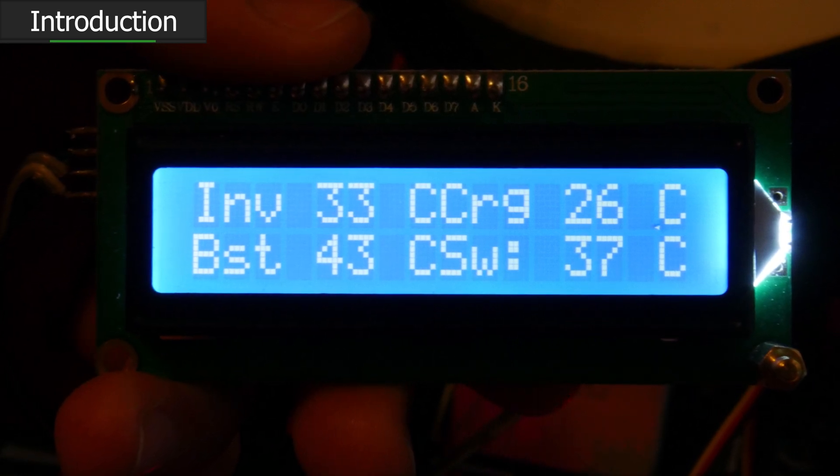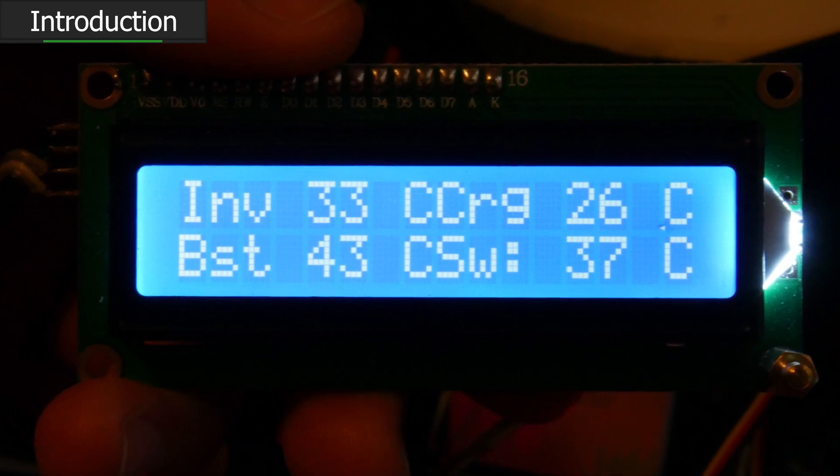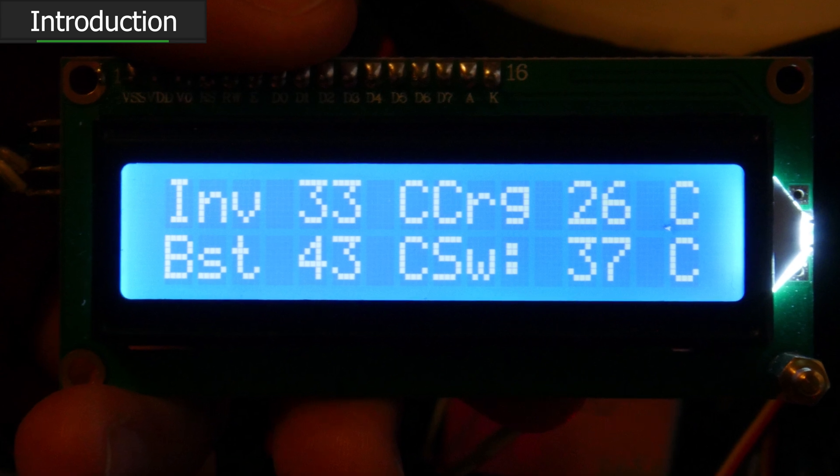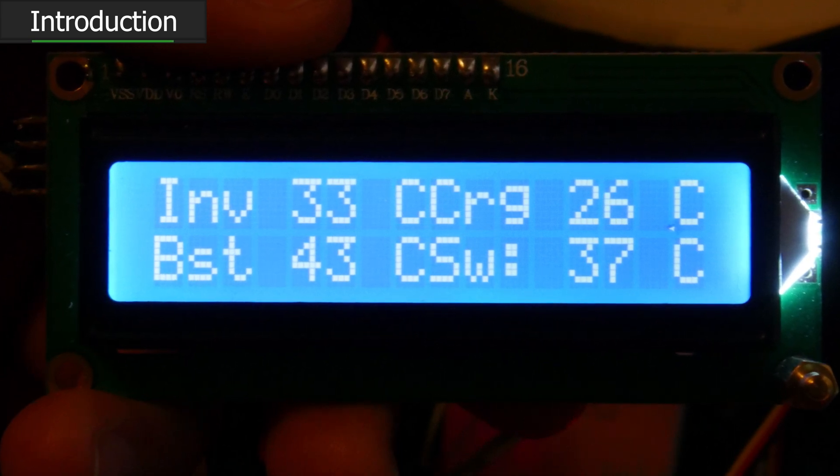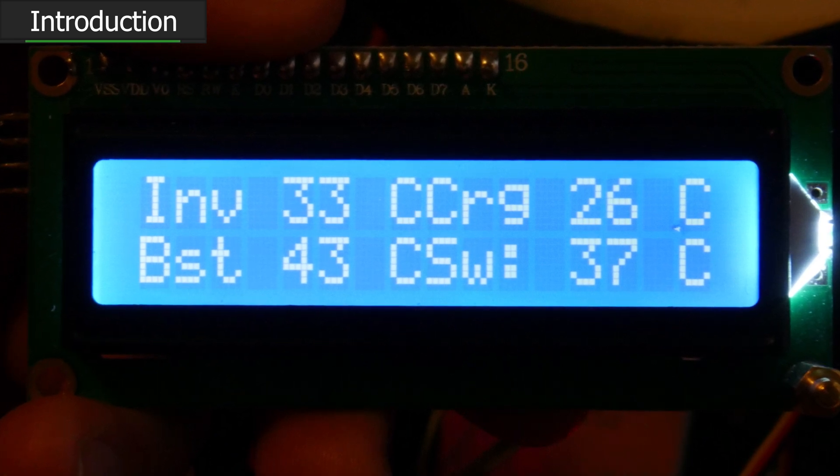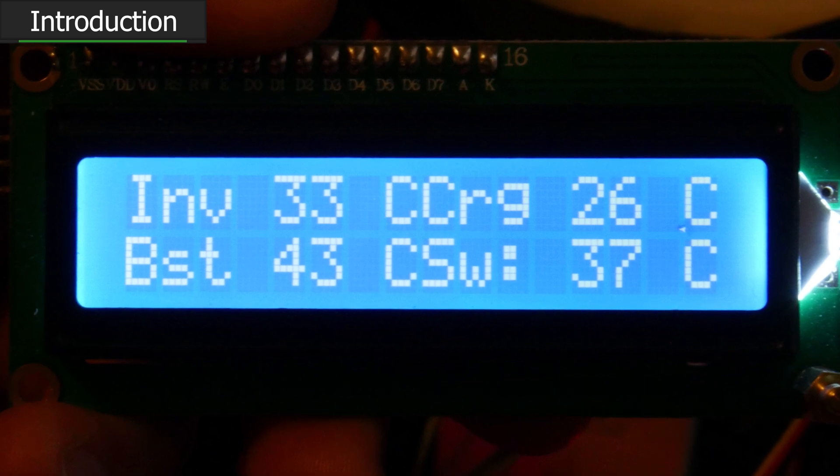It leads me to believe that our implementation of the temperature sensor or implementation of the analog voltage reference had a serious problem, like instability kind of serious. Look at this. These temperature monitors are all at the same temperature. The UPS has not been working. These are all room temperature and we're seeing a 10 degree spread in the measured temperature. That's not okay.